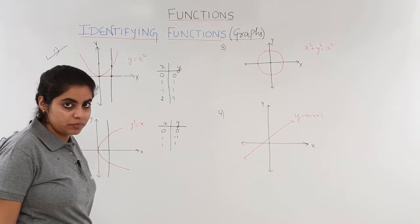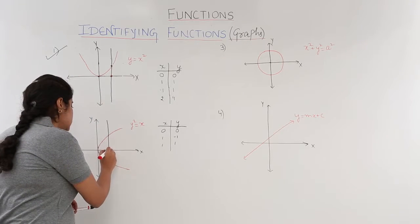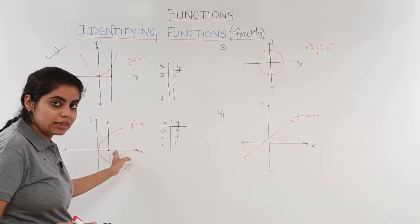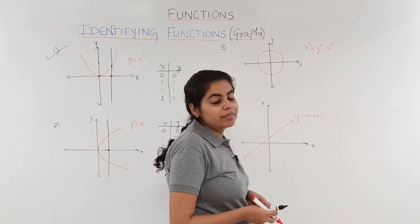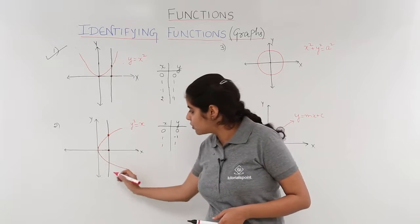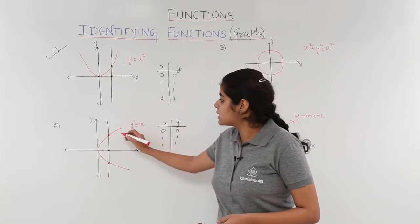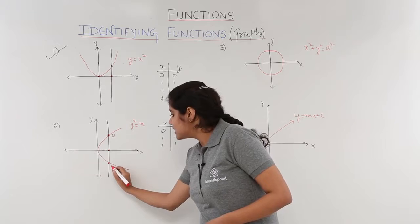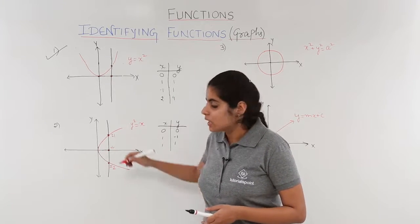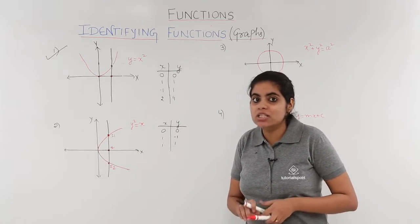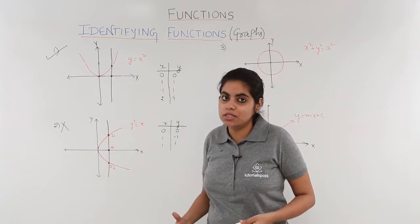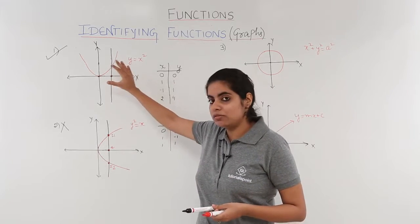For any particular value of x — this is the value of x I have marked — I see that there are more than one values of y. That means the x value has more than one image: this is image i1 and this is image i2, which should not be the case. Hence this graph of y squared equals x is not a function, because for a particular value of x the image is not unique.